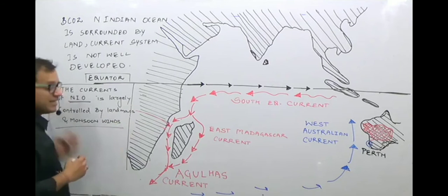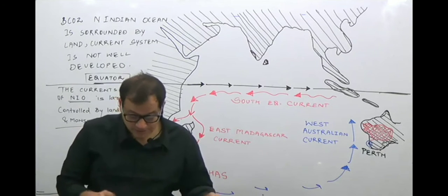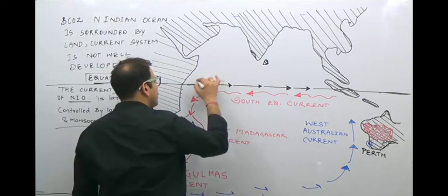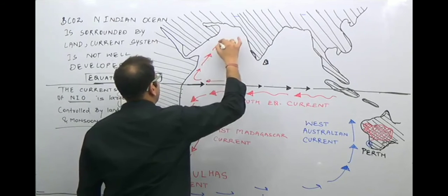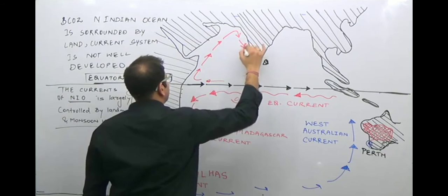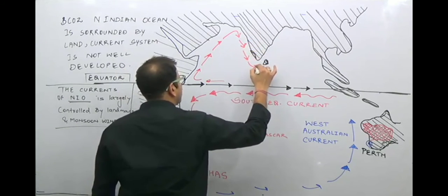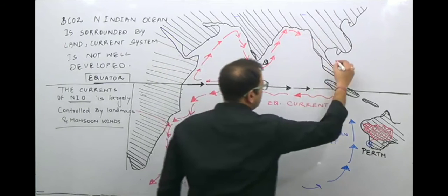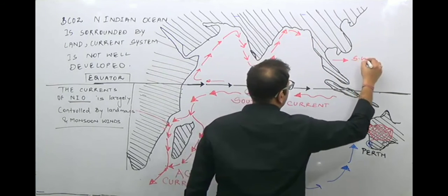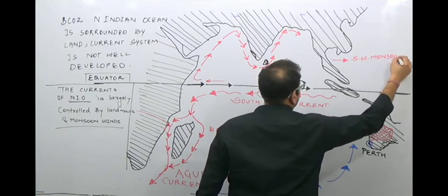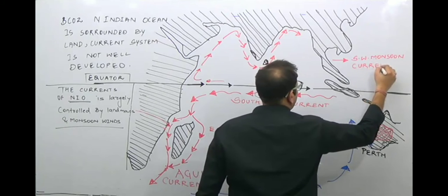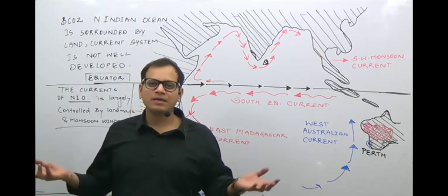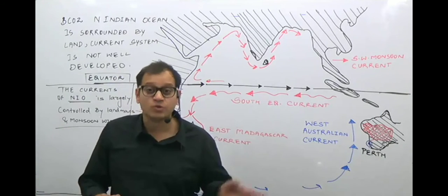How is the effect of monsoon winds seen? During the summer season, the winds blow as the Southwest Monsoon. So we have a Southwest Monsoon Current which comes towards India, flowing as the Southwest Monsoon Current during the summer season. This is a warm current because it develops during the summer season along with the Southwest Monsoon.